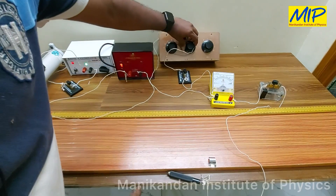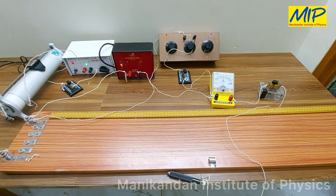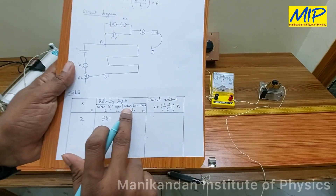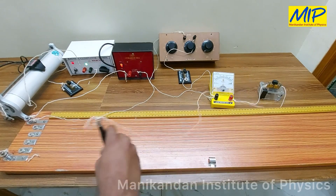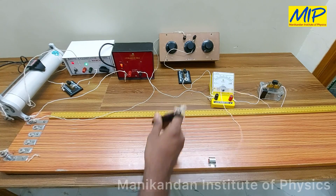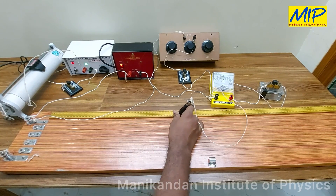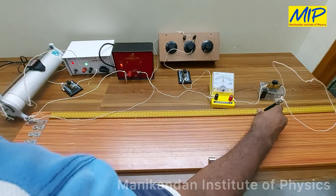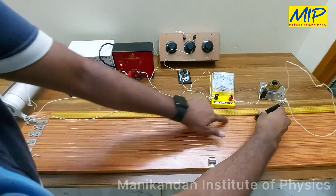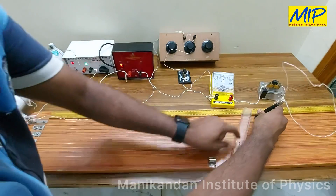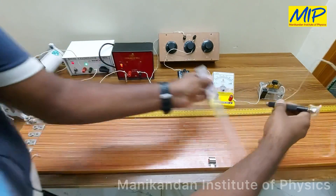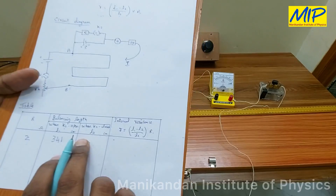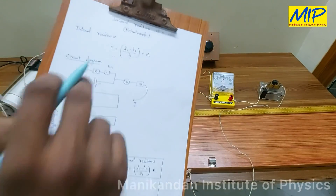Now I am going to close key K2 and fix the value of the resistance box at 2 ohms. The system is now in closed condition with R equal to 2 ohms. Finding the balancing length with K2 closed, I get null deflection on the first line itself. Measuring the value, it is approximately 68 centimeters. So l2 is 68 centimeters when R equals 2 ohms.